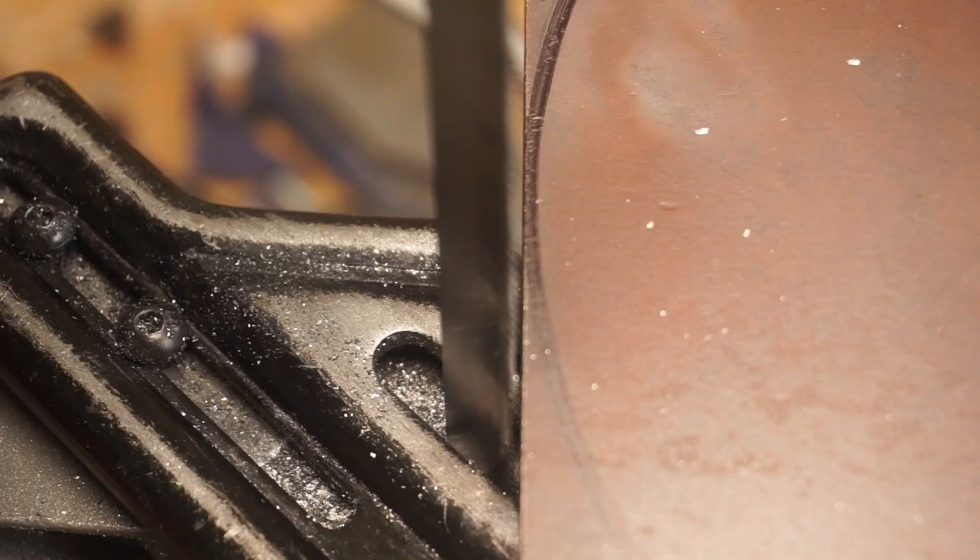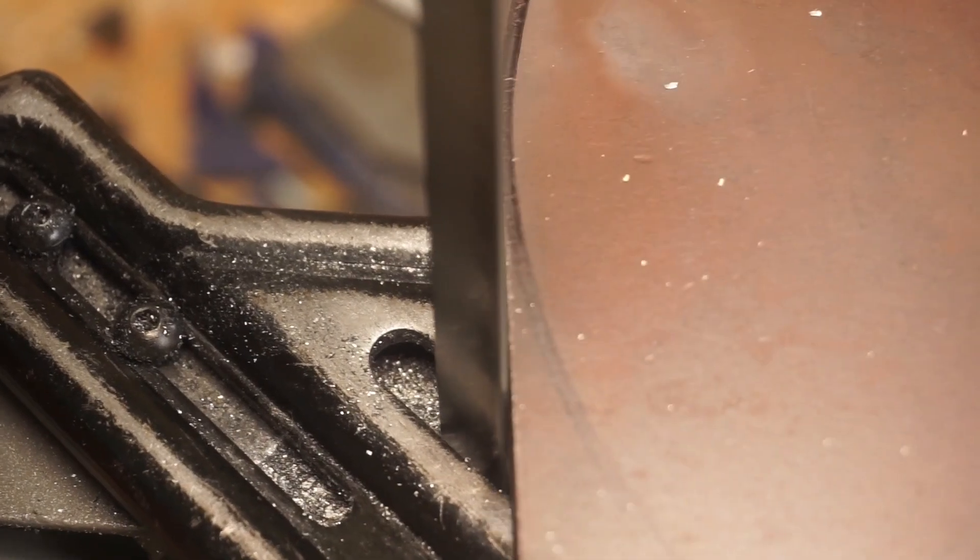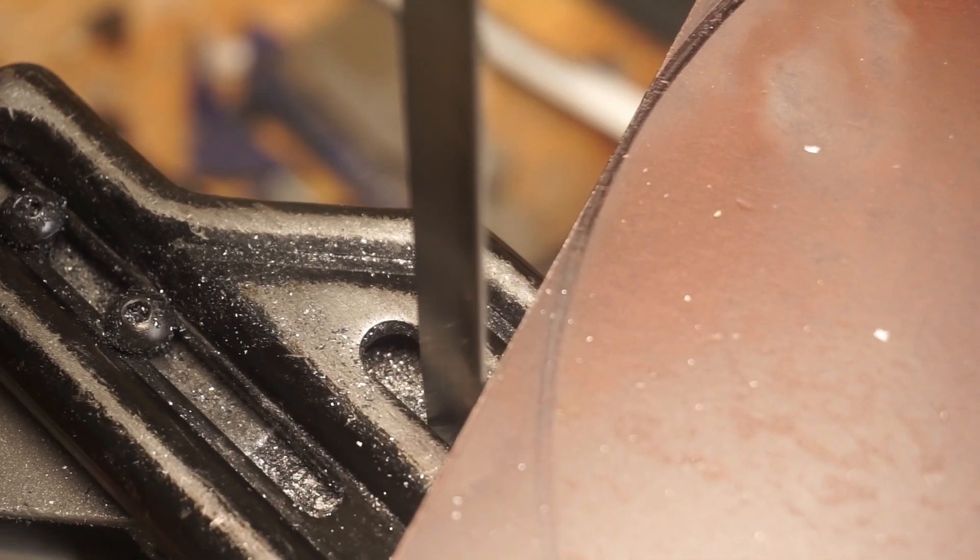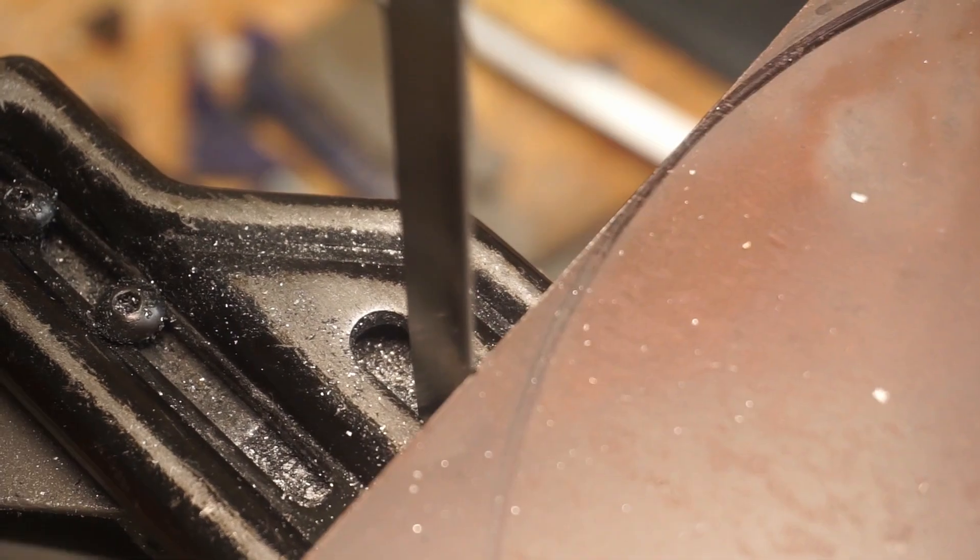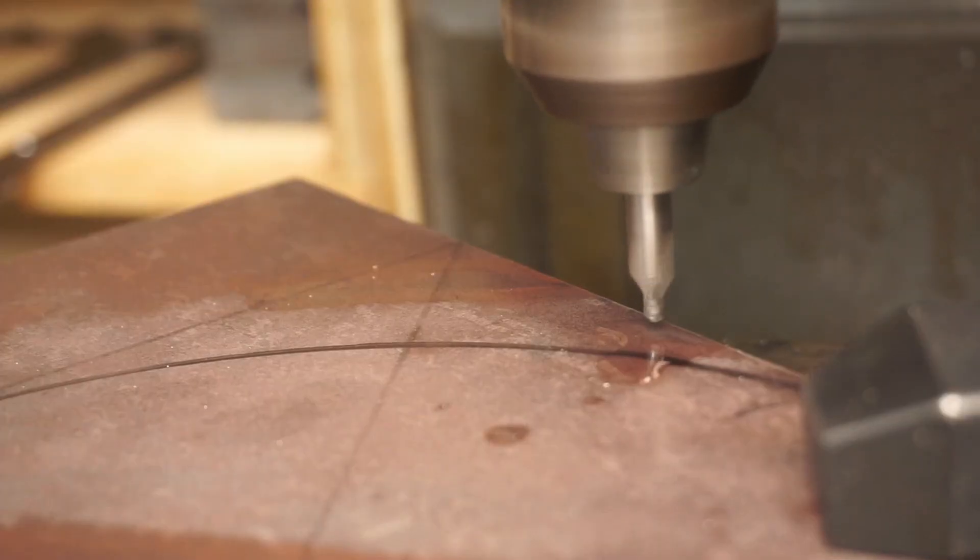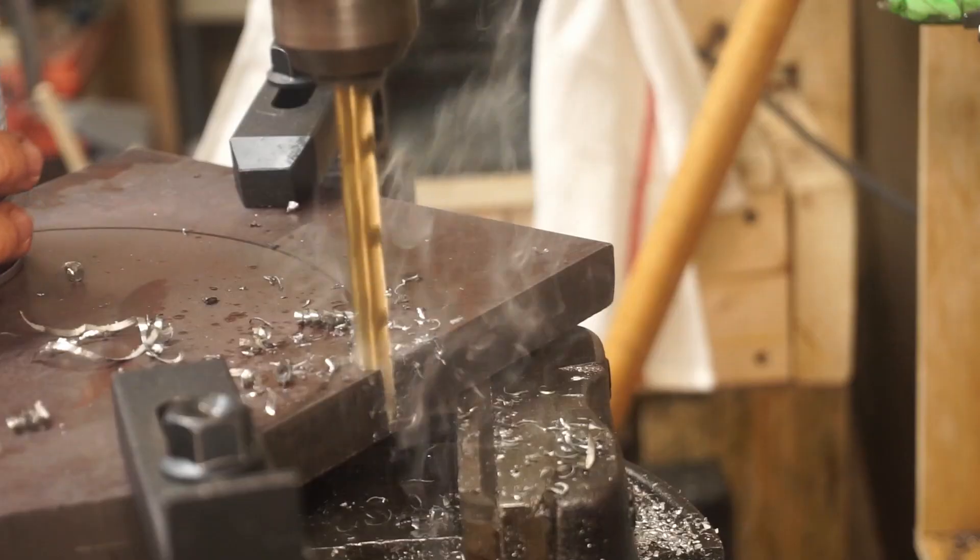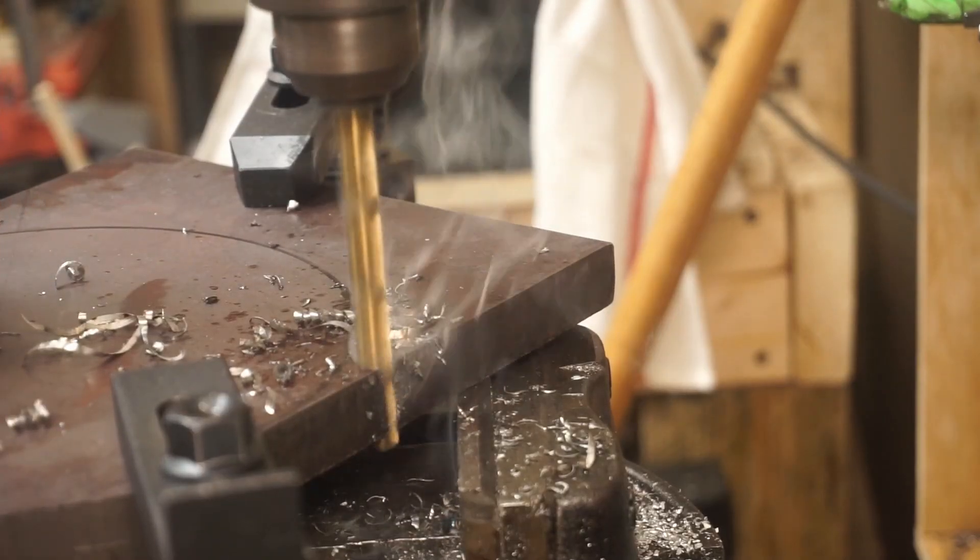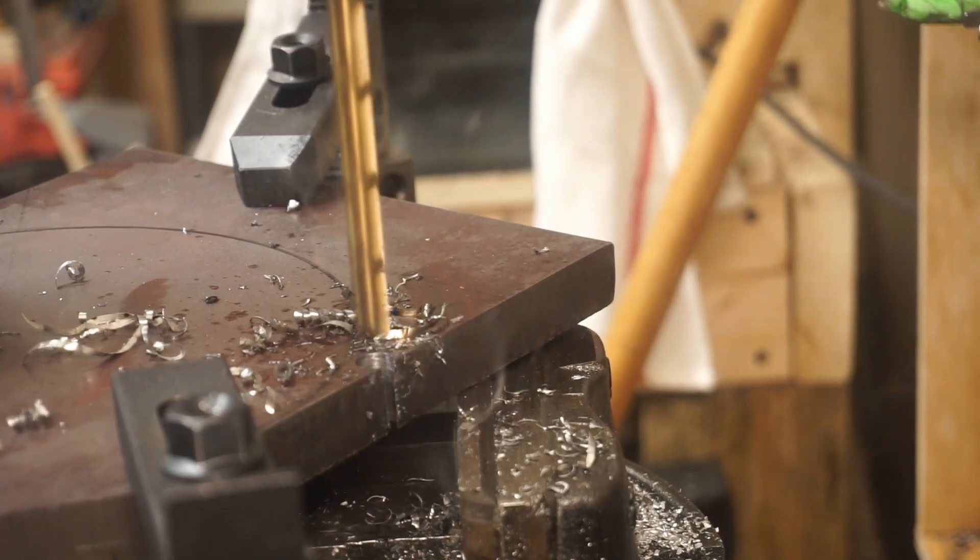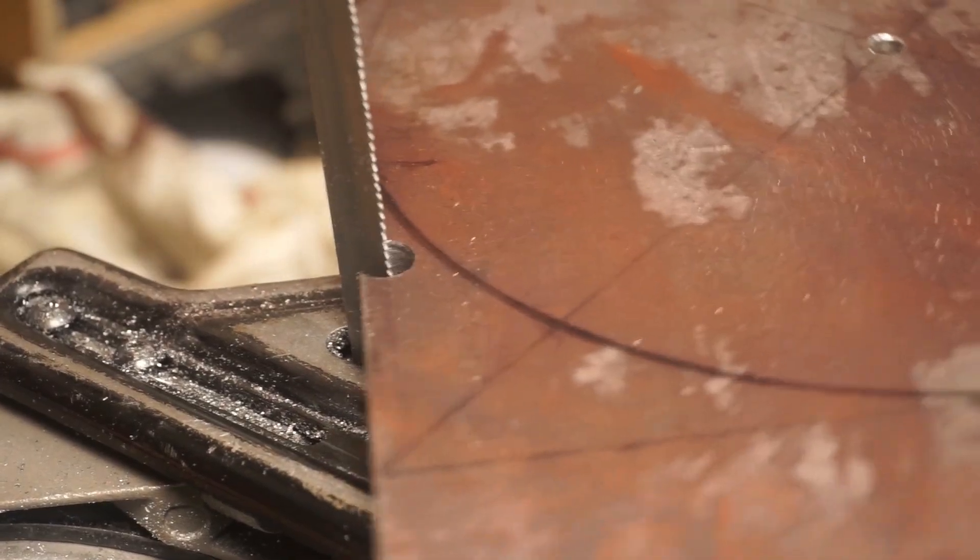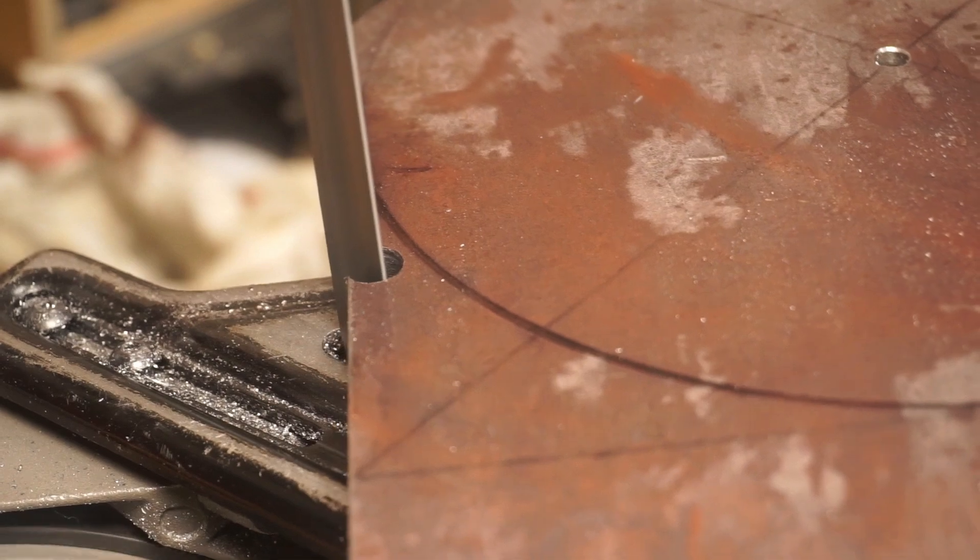Now I'll rough cut the circles on the bandsaw. I had quite a hard time getting the cut started. It seemed like the outside of this steel was covered in some sort of super hard oxidation or something. I ended up instead drilling some holes near the edge that allowed a bandsaw blade access to the inside of the part, unoxidized metal.